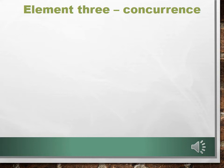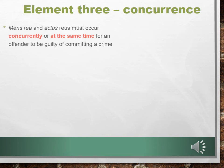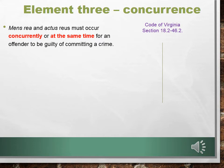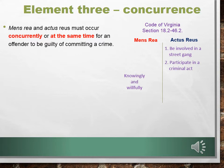Now that we can prove what the person was thinking and doing, it's time to move to element three: concurrence. Mens rea and actus reus must occur concurrently, or at the same time, for an offender to be guilty of committing a crime. In Code of Virginia Section 18.2-462, the mens rea is 'knowingly and willfully,' and the actus reus is being involved in a street gang, participating in a criminal act committed for the benefit of, at the direction of, or in association with the gang.